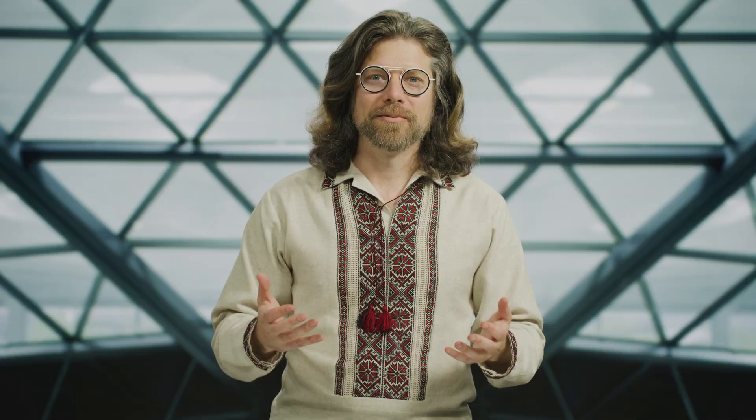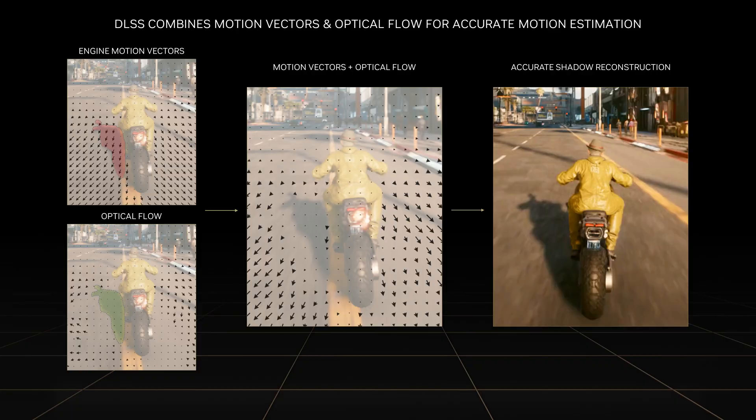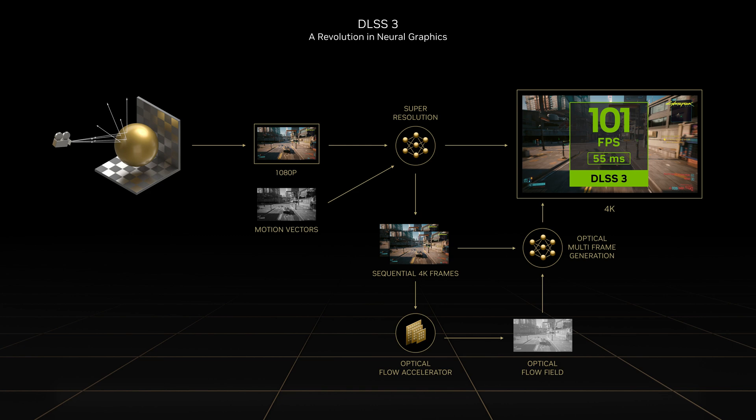You may be asking: what is the Optical Flow Accelerator and why do we need it? The Optical Flow Accelerator analyzes two sequential frames and computes an optical flow field that describes how pixels in the first frame are moving in order to create images in the second frame. We use optical flow in conjunction with geometric motion vectors from the game — each of them has complementary strengths. The decision about when to use each for different parts of the scene is quite complicated, so we train the DLSS Frame Generation AI to make use of both optical flow and motion vectors in order to generate the highest quality intermediate frames.